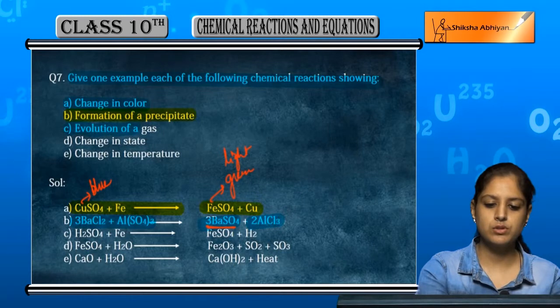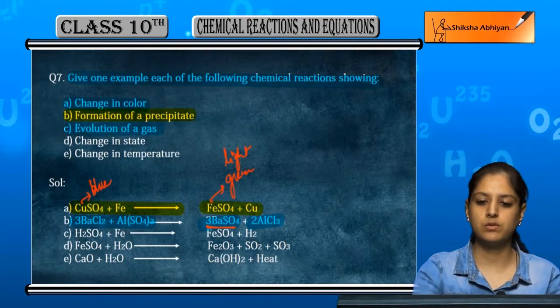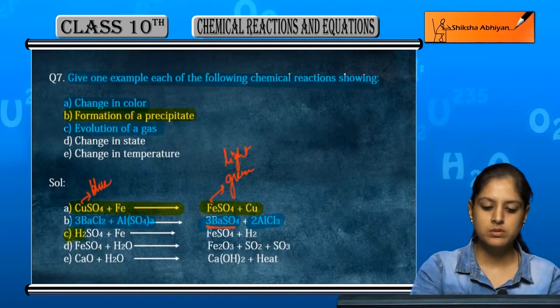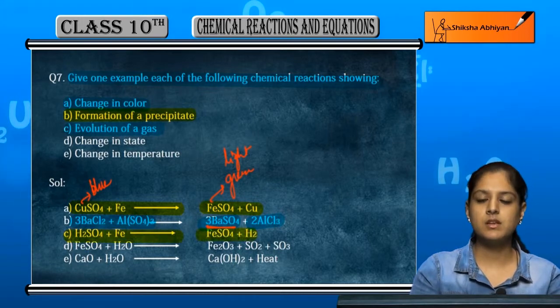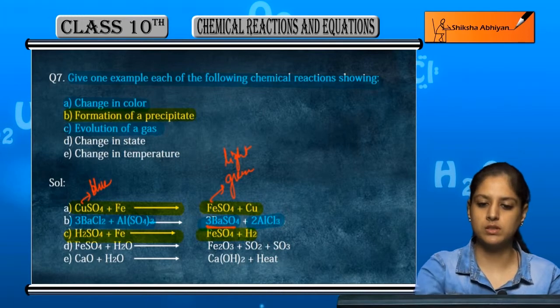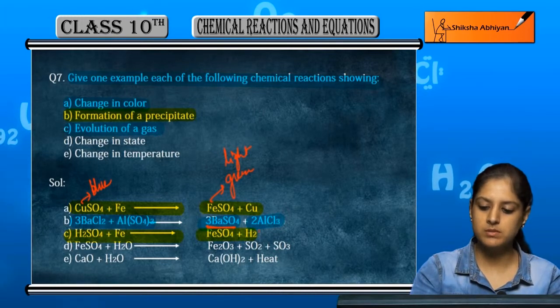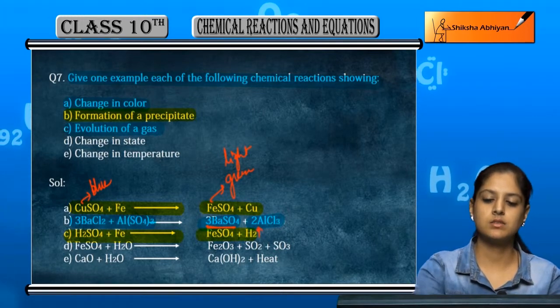Next is evolution of gas. This means gas evolves. So, sulfuric acid plus iron gives ferrous sulfate and hydrogen gas evolves. Evolution of gas means hydrogen gas evolves.